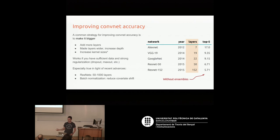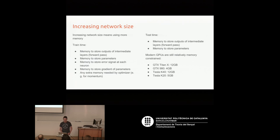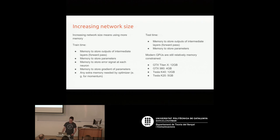Increasing network size means using more memory. At training time, you need memory to store the outputs of the intermediate layers — for a convolutional layer, all the filter outputs need to be stored. You also need memory for the network parameters (the weights and biases you're trying to optimize), memory to store the error signal during back-propagation, and memory to store the gradient of each parameter.